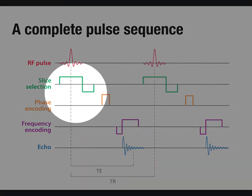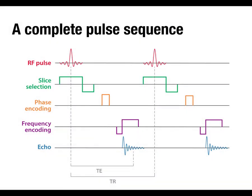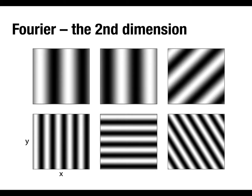We've selected our slice, and now within the slice — in a typical structural MRI you might have 128 by 128 individual pixels — we need to figure out how to spatially encode the additional two dimensions. The way we do that is through tricks involving two-dimensional Fourier transforms.